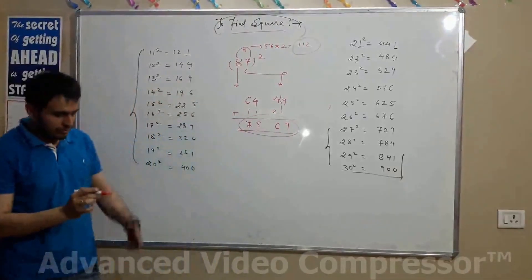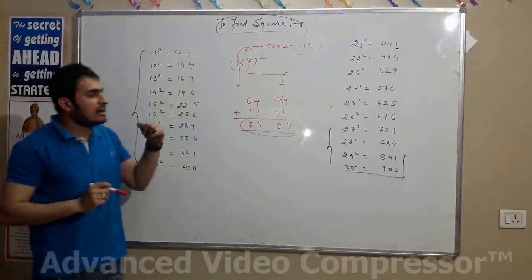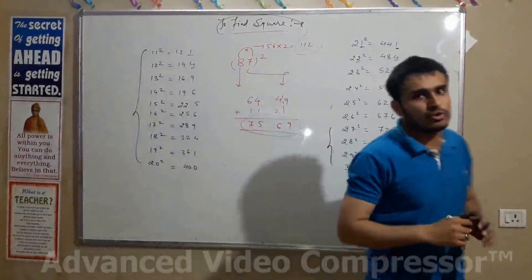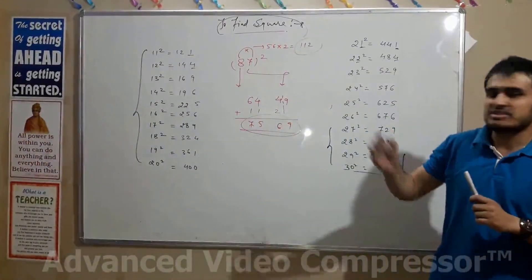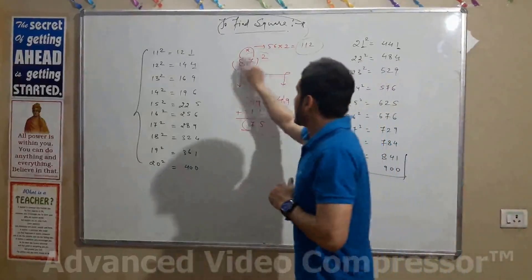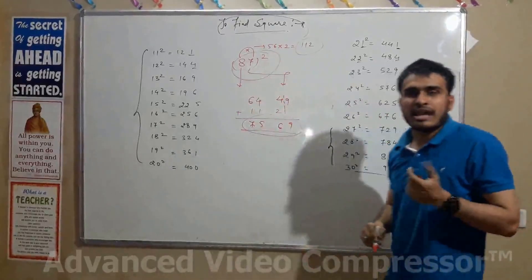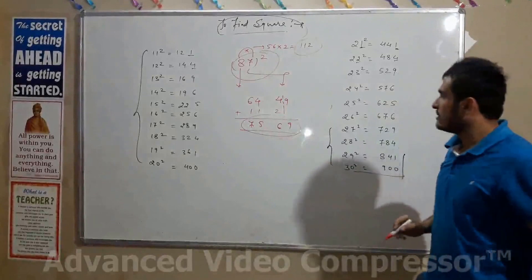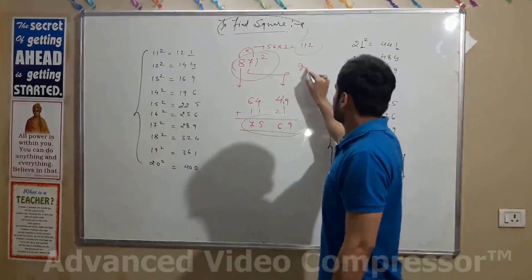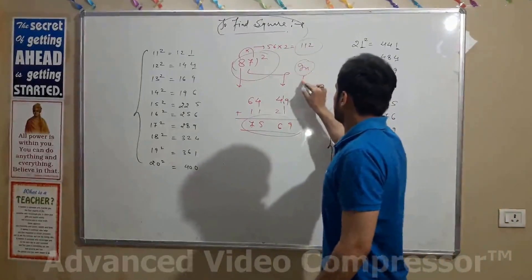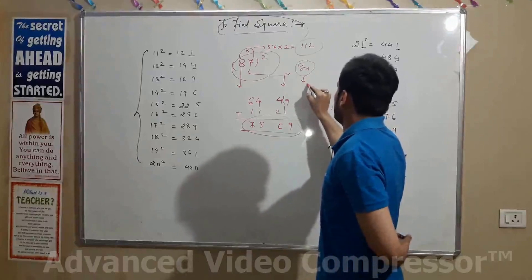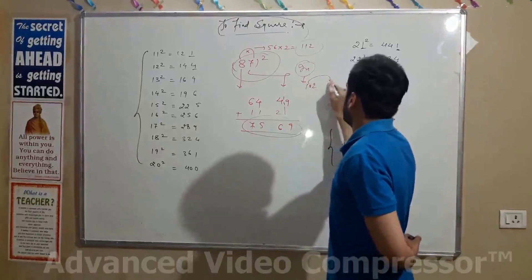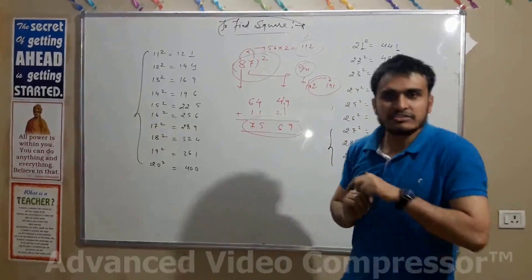So if we go through the traditional method, we have to go through a number of steps. But if we go through this method, you only need 5 to 6 steps. In another session, we will discuss finding squares from 102 up to 199. Thanks for watching this video.